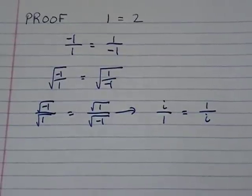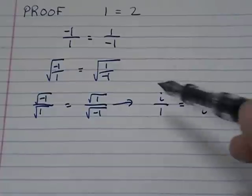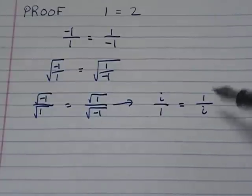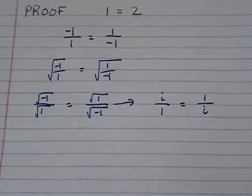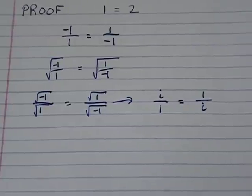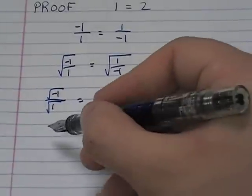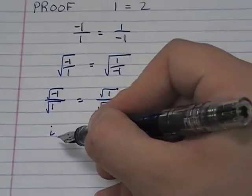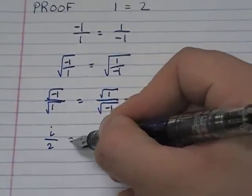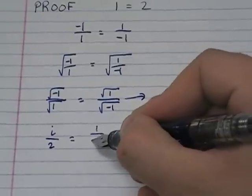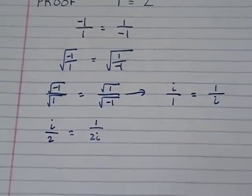And we're going to take this, what we've got right now, i/1 = 1/i, and we're going to multiply both sides by 1/2. This is going to give me i/2 = 1/(2i).